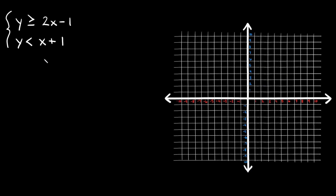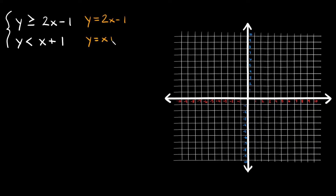So this is the system we're gonna graph. y is greater than or equal to 2x minus 1, and y is less than x plus 1. The first thing you want to do is graph these two lines by simply turning them into a regular linear equation. To do that, replace the inequality symbols with equal signs. So this first one would be y equals 2x minus 1, and this one would be y equals x plus 1.